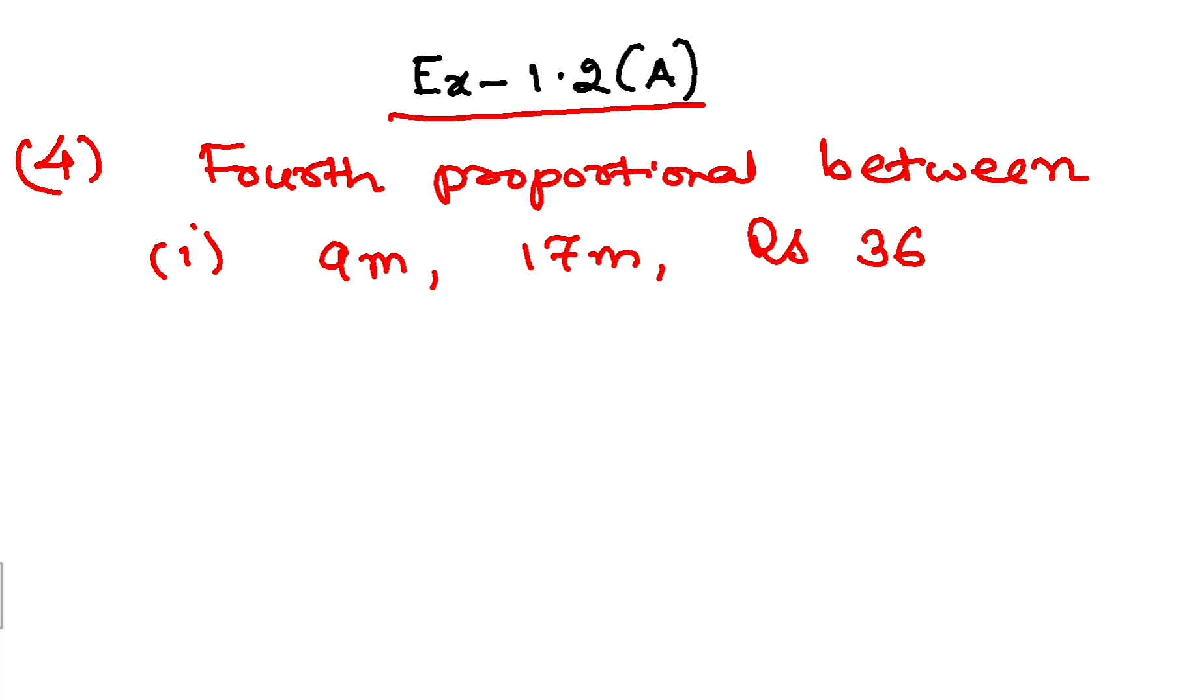So fourth proportional, fourth term. Now there will be four numbers A, B, C, and D, and this D will be called the fourth proportional. Applying the concept of proportional, A by B should be equal to C by D.